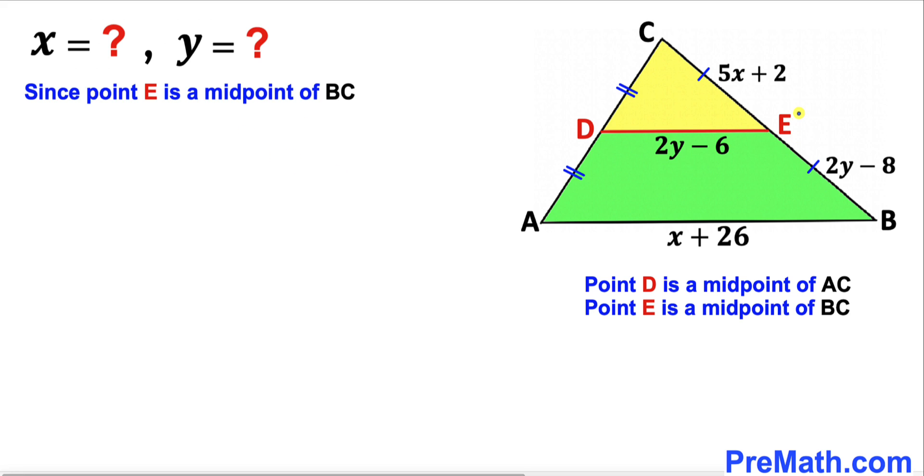We know that point E is the midpoint of line BC. That means line segment CE equals line segment EB.